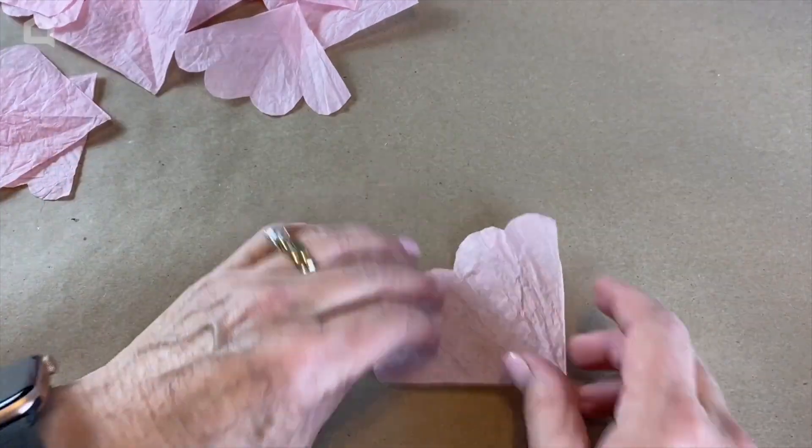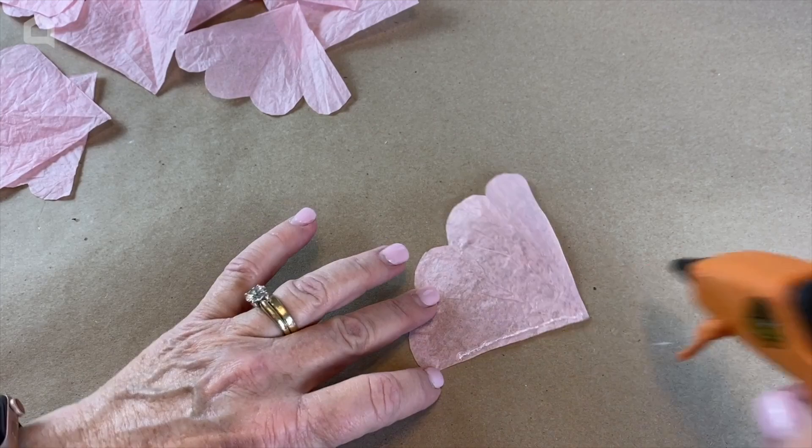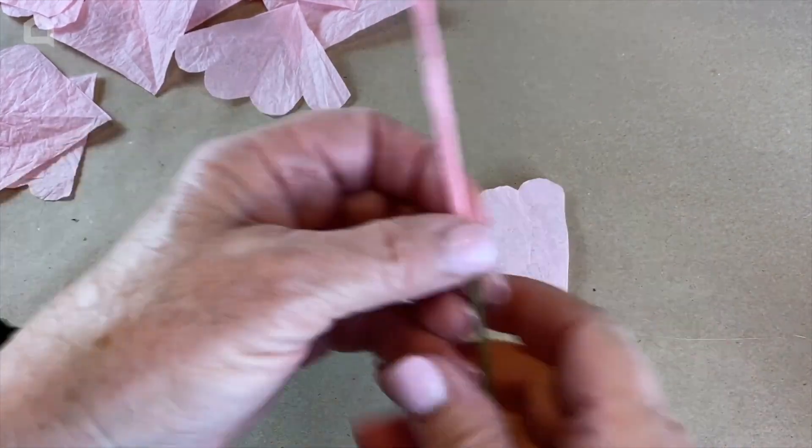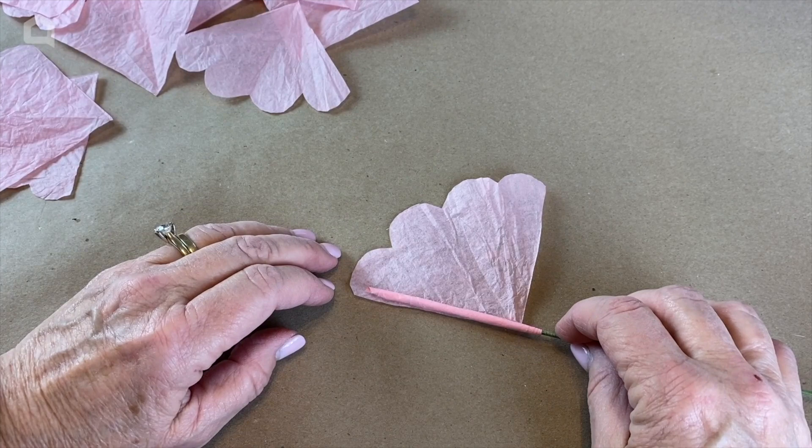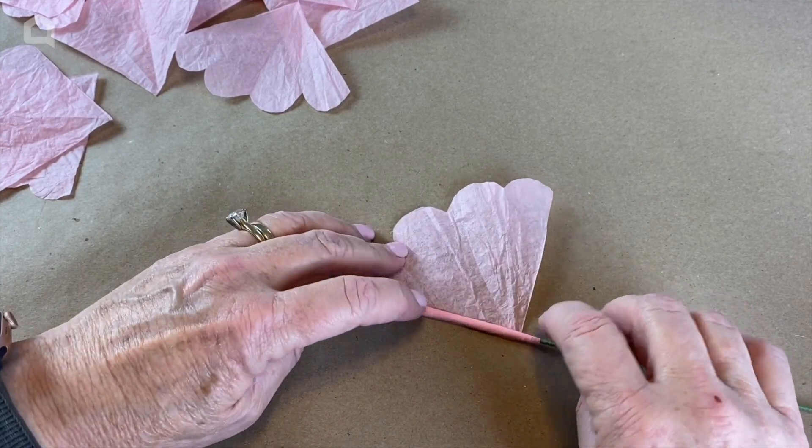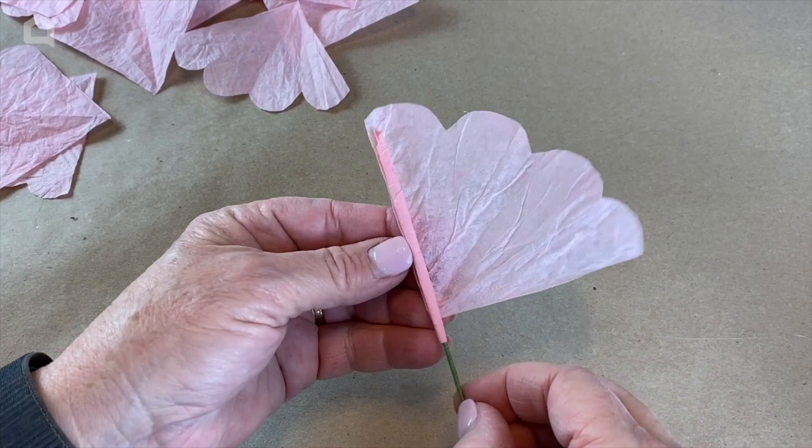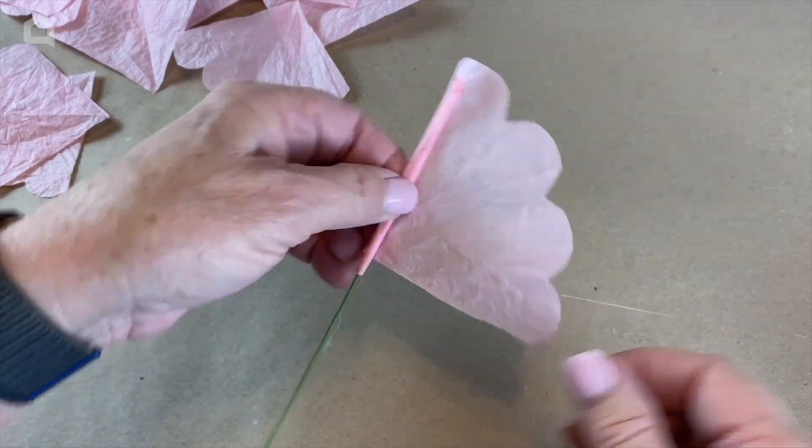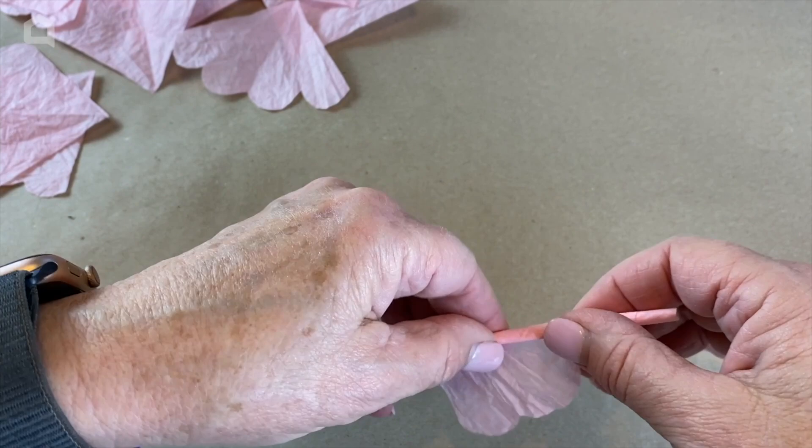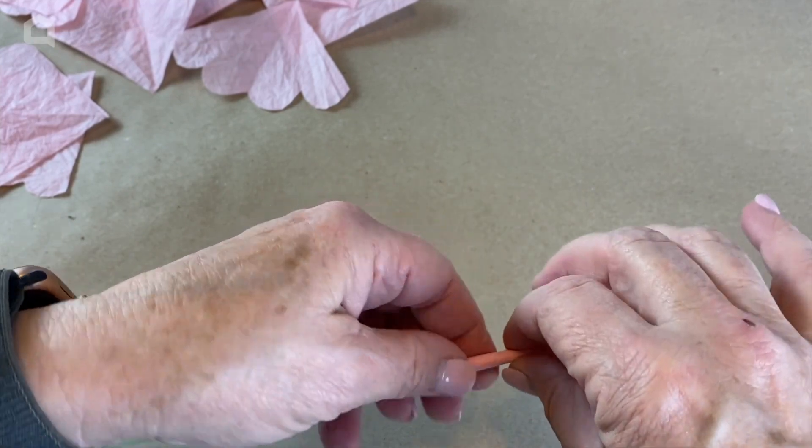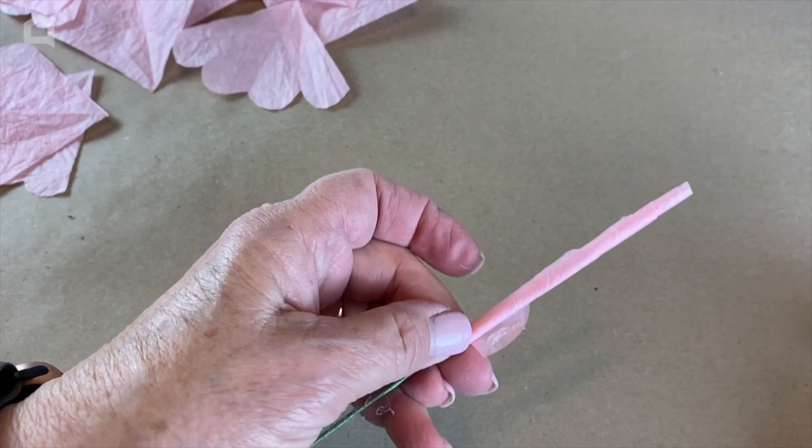We're going to do the same thing again. Put a little bead of hot glue right there. We're going to put this down right on top of it, just a little bit higher. You want each petal to be up a little bit higher. Press that down and do the same thing. Roll, roll, roll. Nice and snug. When you get to the end, a little bit of glue to hold that.